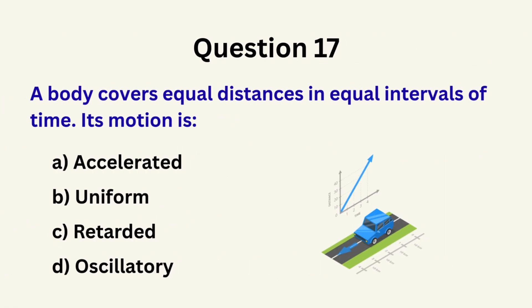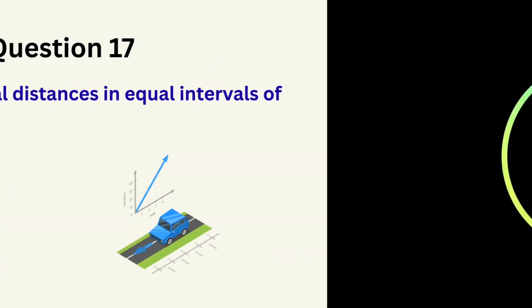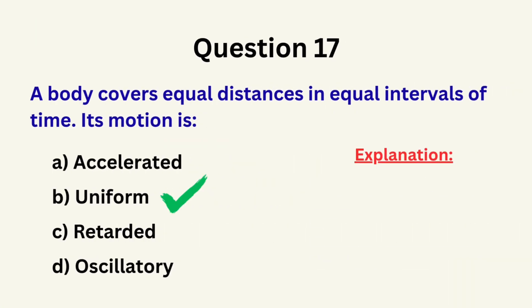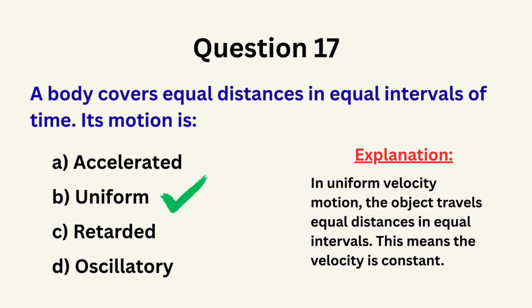Question 17: A body covers equal distances in equal intervals of time. Its motion is... A. Accelerated, B. Uniform, C. Retarded, D. Oscillatory. The correct answer is B: uniform.